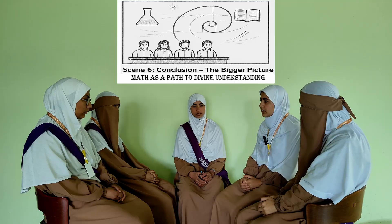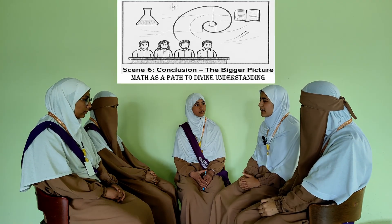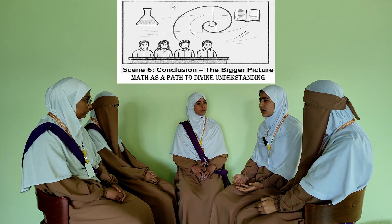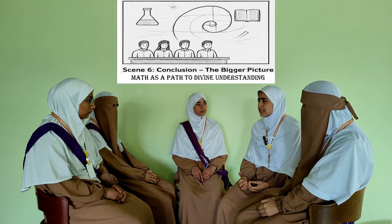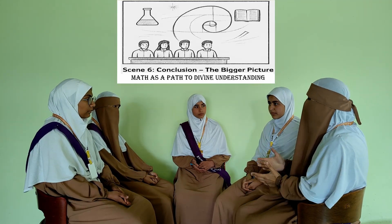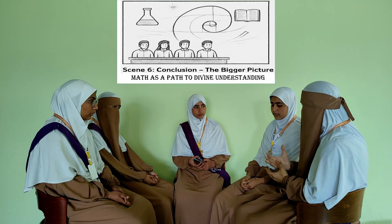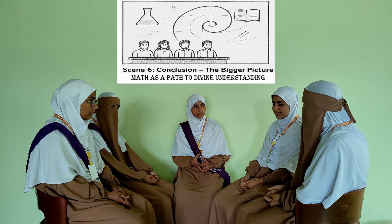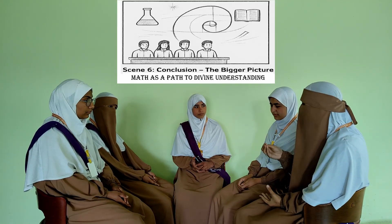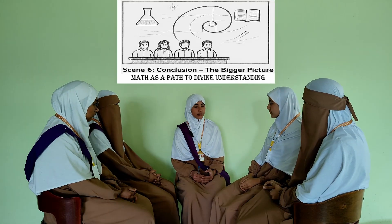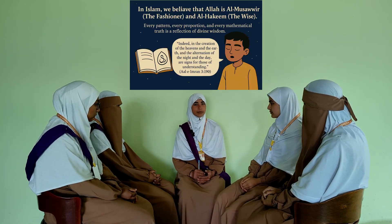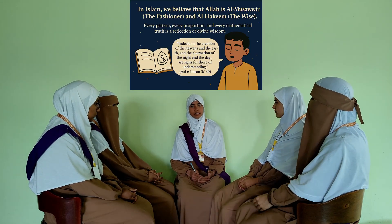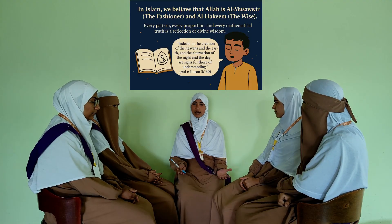The deeper meaning — the unity in the universe. This is where things get really interesting. Why does the same pattern appear in galaxies, plants, architecture, and art? It is as if the universe is woven by the same thread. Exactly, Sister Basma. This shows that mathematics isn't just about numbers — it's about understanding the deep order and balance in creation. The Fibonacci sequence and the golden ratio are signs of unity in diversity. In Islam, we believe that Allah is Al-Musawwir, the Fashioner, and Al-Hakim, the Wise. Every pattern, every proportion and every mathematical truth is a reflection of divine wisdom.